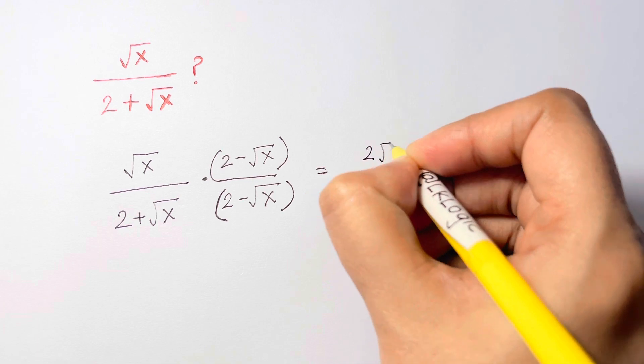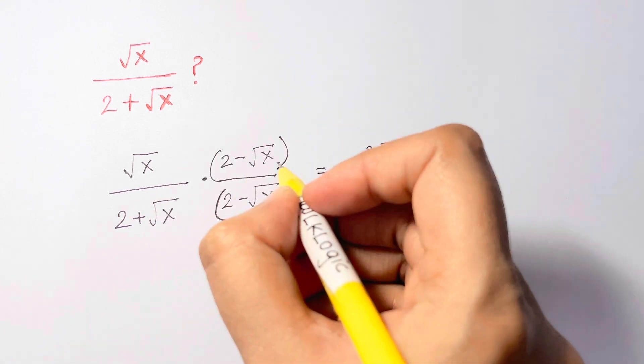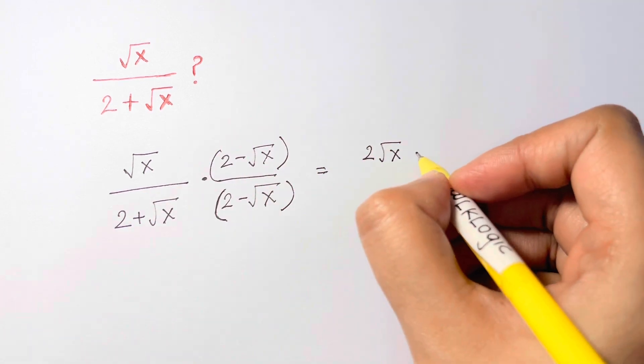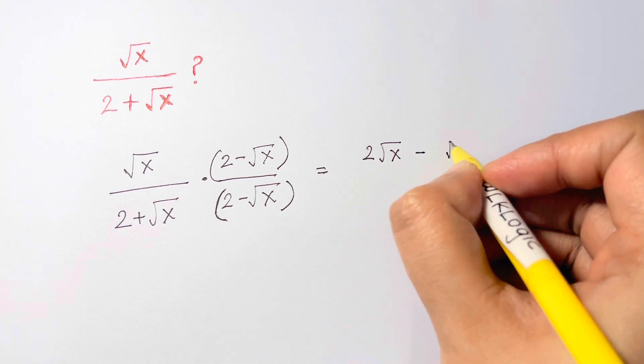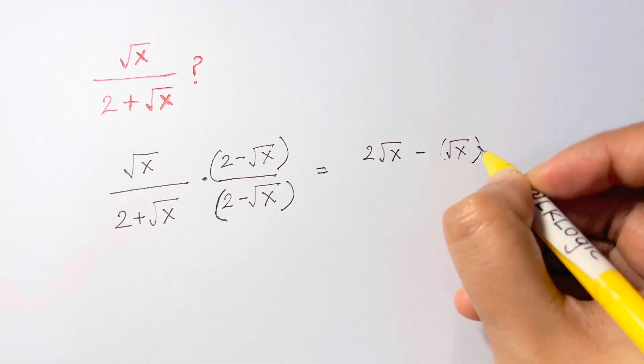Root x times root x is root x the whole squared. Root x the whole squared over...